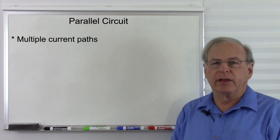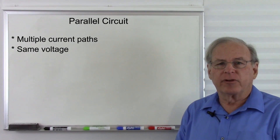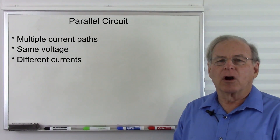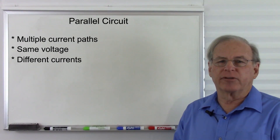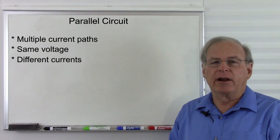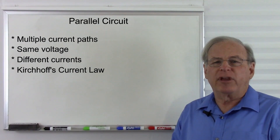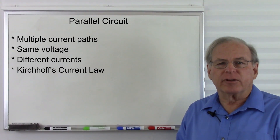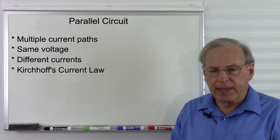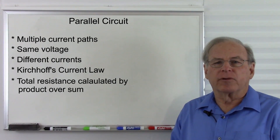So the rules for a parallel circuit are: one, the definition of a parallel circuit is a circuit with multiple current paths. The voltage is the same everywhere in the circuit. The currents through the resistors or other components are going to be different unless they happen to have the same resistance, and the current is inversely proportional to the resistance. We also have Kirchhoff's current law, which states that the currents through the various branches will add together to the total current. And the total resistance is calculated by the product over sum method.